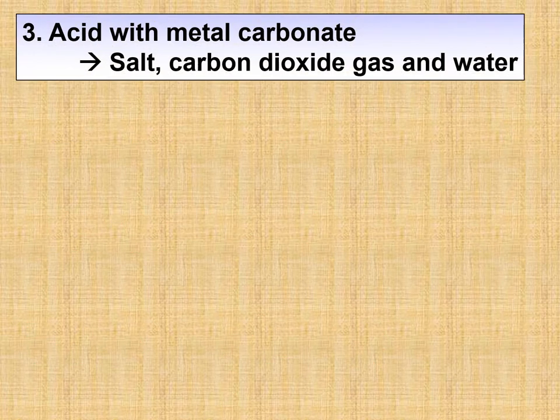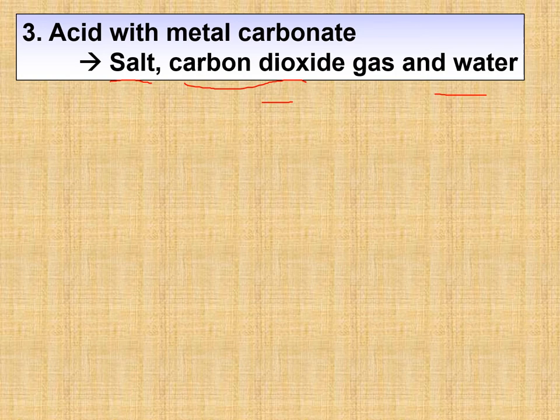The third property: when acid reacts with metal carbonate, it produces salt, carbon dioxide, and water — three products. This is the longest among the three properties of acid. Examples of metal carbonates include magnesium carbonate, aluminium carbonate, and copper carbonate.